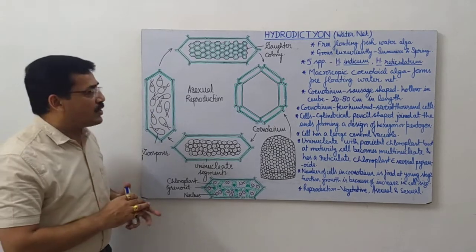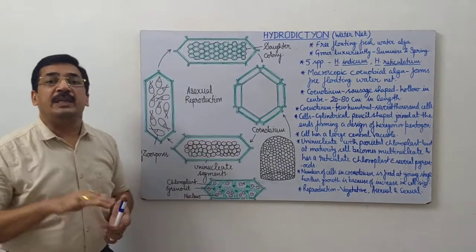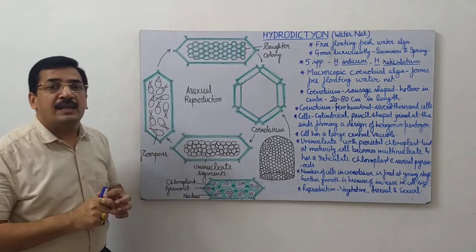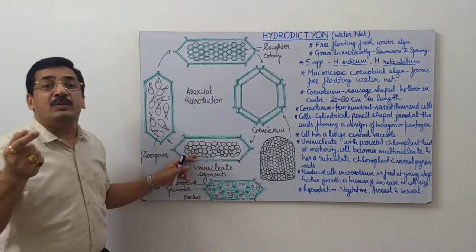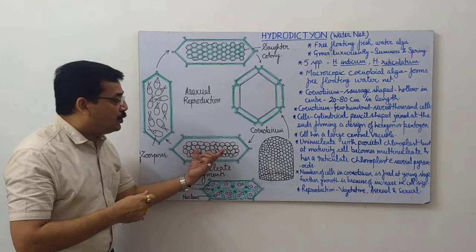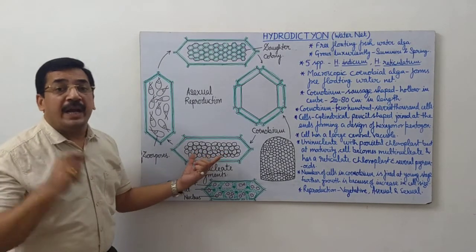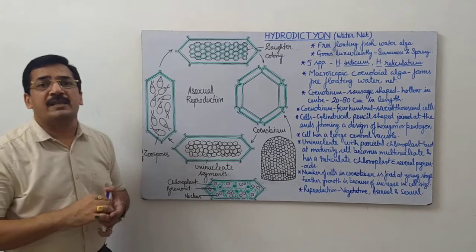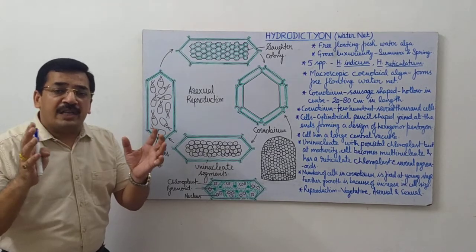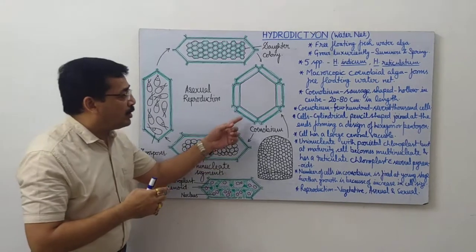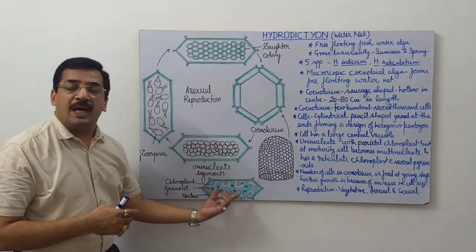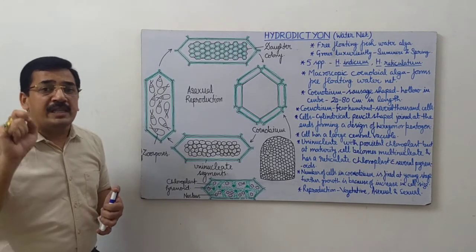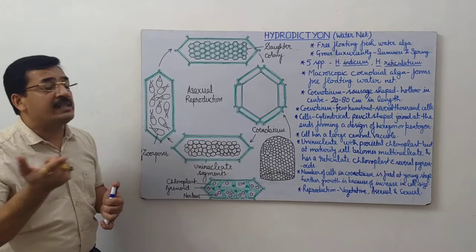During asexual reproduction, any cell of the colony may behave like a zoosporangium. The multinucleate protoplasts of the cell divide into 7,000 to 20,000 uninucleate segments. Before zoospore formation, the pyrenoids disappear from the cell and starch grains are accumulated in the chloroplast. Each segment is converted into a biflagellate zoospore.